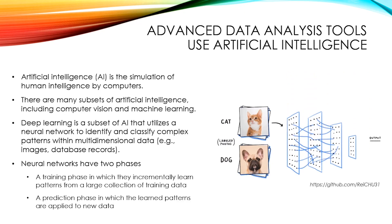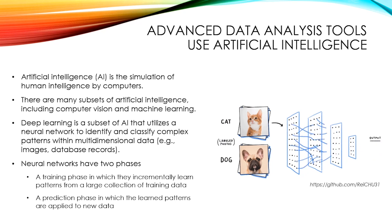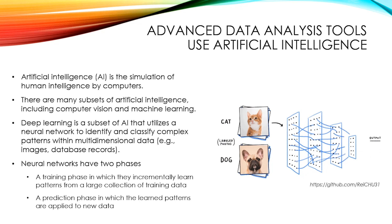Advanced data analysis tools use artificial intelligence. Artificial intelligence, or AI, is the simulation of human intelligence by computers. There are many subsets of AI, including computer vision and machine learning. Deep learning is a subset of AI that utilizes a neural network to identify and classify complex patterns within multidimensional data, for example, images or database records.